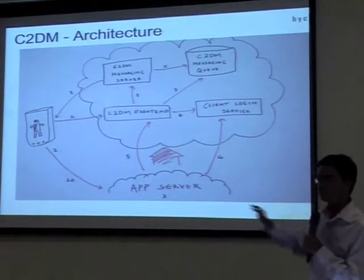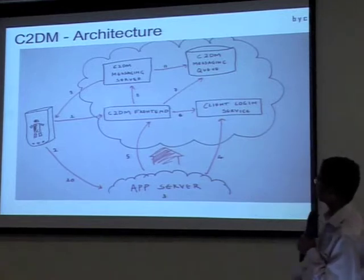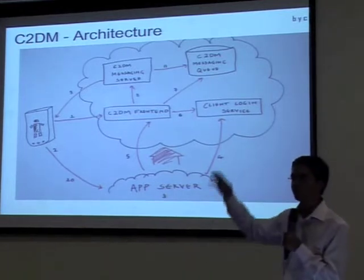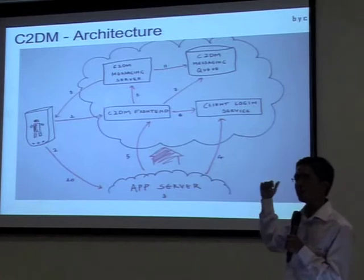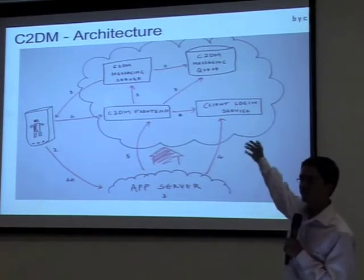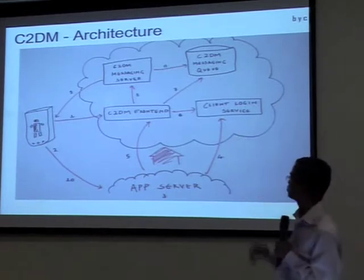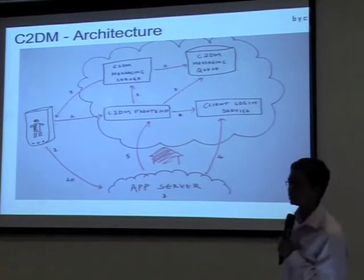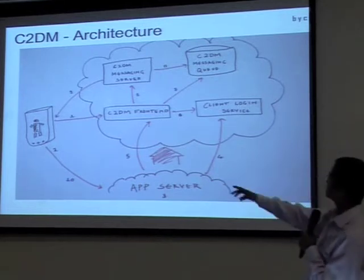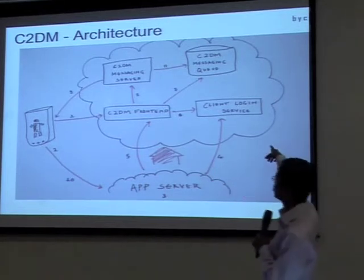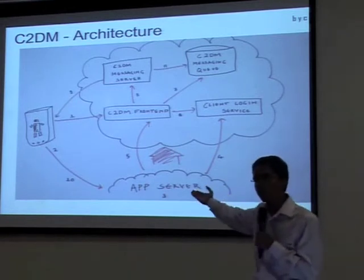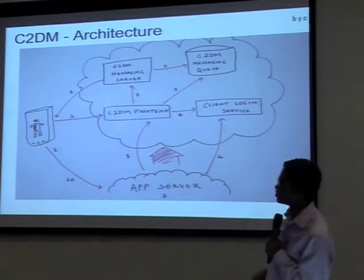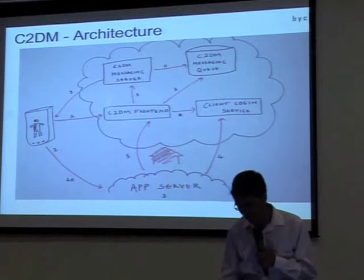I will go step by step through how the various things take place. Basically there are steps for authentication and sending the notification from the Google servers. This is the architecture of C2DM: your device, the Google Cloud, and your own app server — one by one we will look into all of the steps.